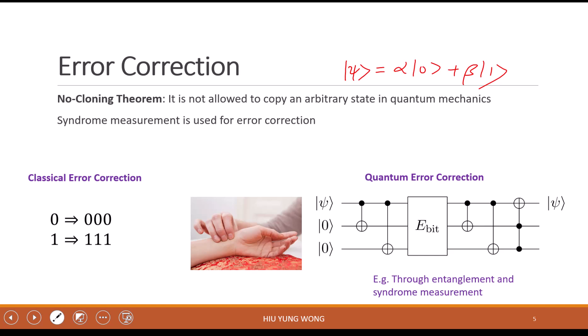So basically what we do is the so-called syndrome measurement. In classical error correction we sometimes use the so-called repetition code. If you want to transmit zero, you duplicate it three times. And then if there's an error you may flip the bit. But as long as the error is not too large, it might just flip one. This becomes a majority vote, that's what you call it.